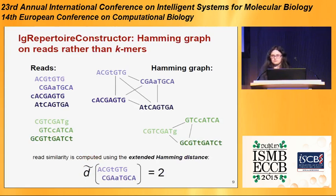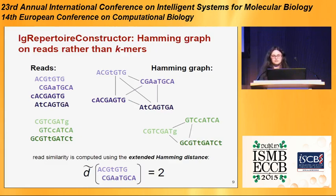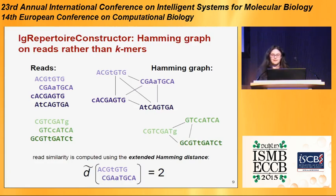We would like to use this approach, but we can't extract K-mers since antibody repertoire is highly repetitive — we would miscorrect our reads if we extract short K-mers. So we try to construct a Hamming graph on reads rather than K-mers. Since reads can start from different positions, we introduce an extended Hamming distance that computes the number of mismatches in a relatively long overlap. For example, for these two reads, the Hamming distance is equal to 2. After that, we construct the Hamming graph and try to extract the original antibodies.